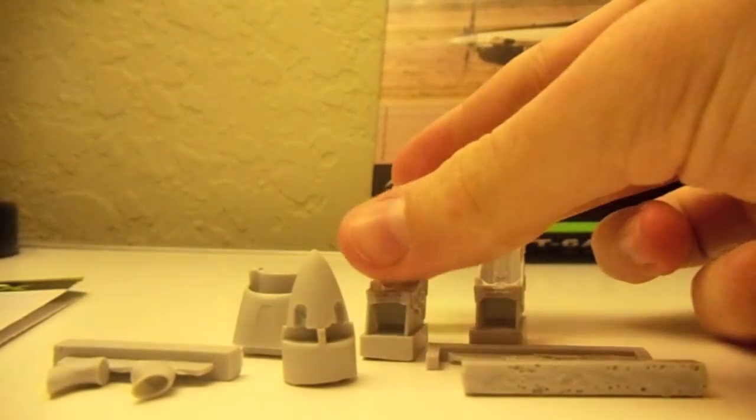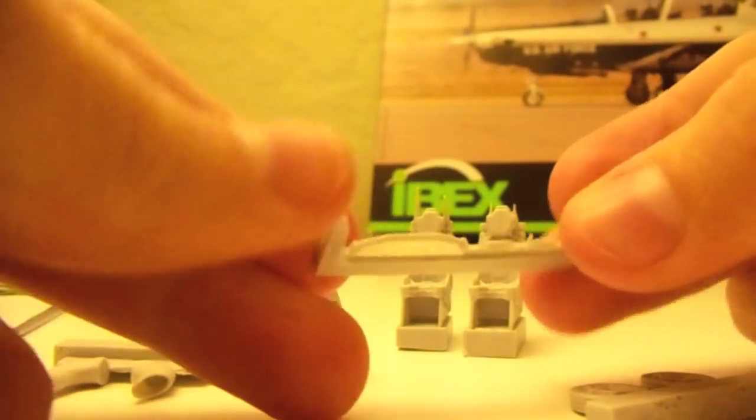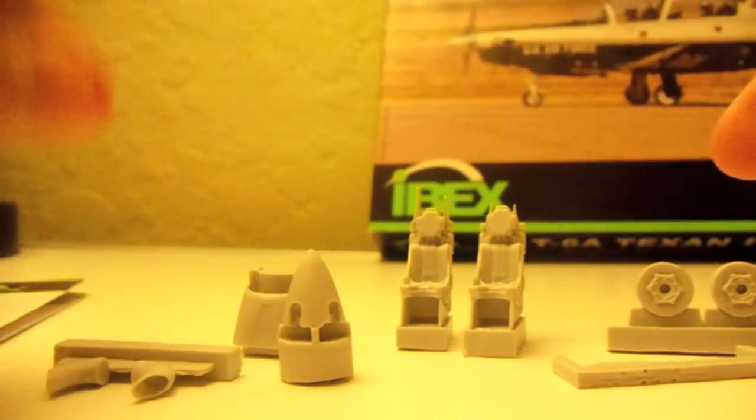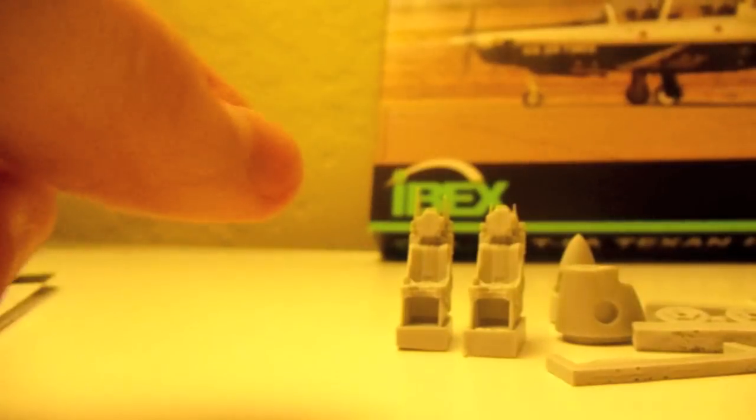The kit also came with some resin pieces. We got the E2 ejection seats, and then we got this piece here which I believe goes on the canopy. We got the two back tires, and then we got the two exhaust pipes, then the cowling, which all have very nice detail, and last but not least the nose cone. All those pieces look really nice.